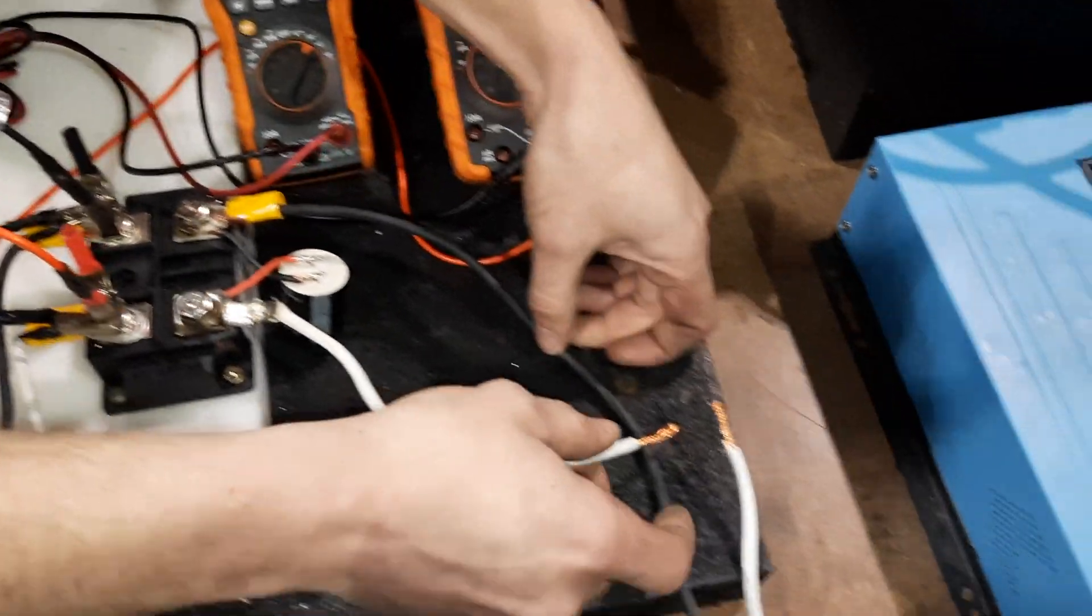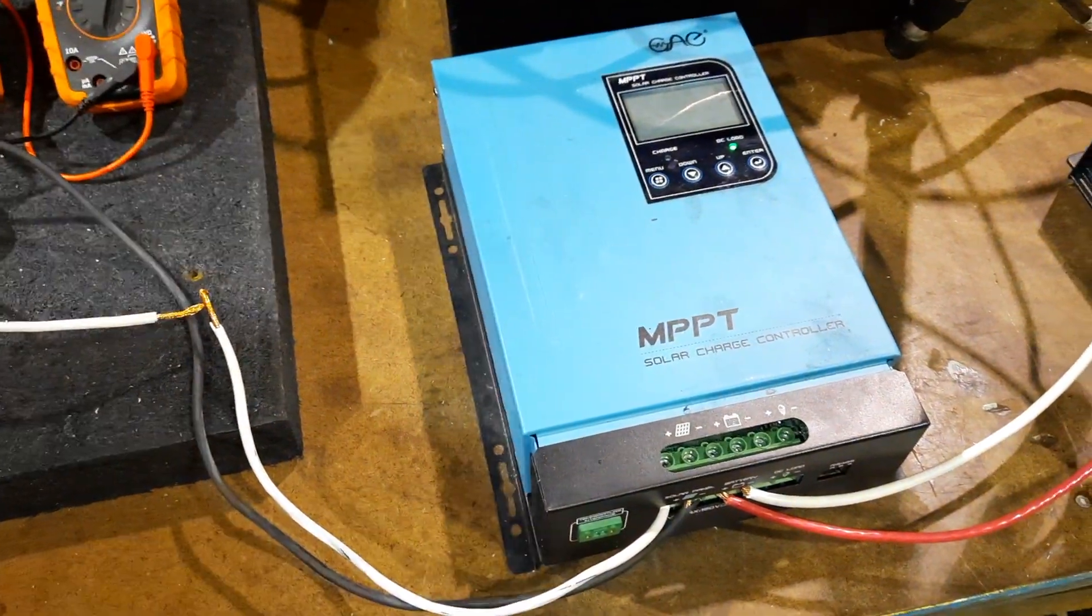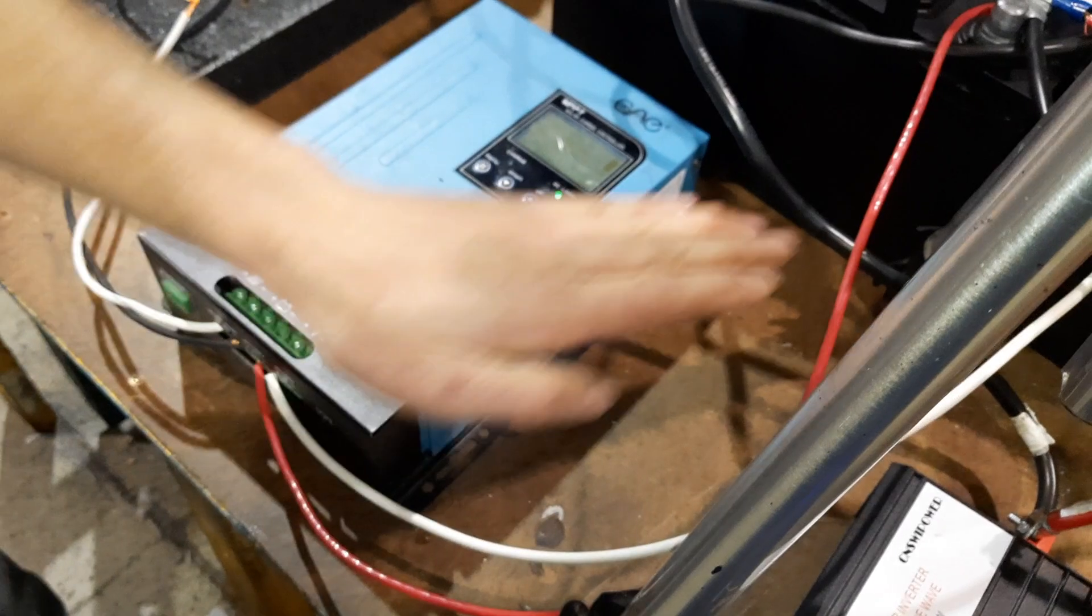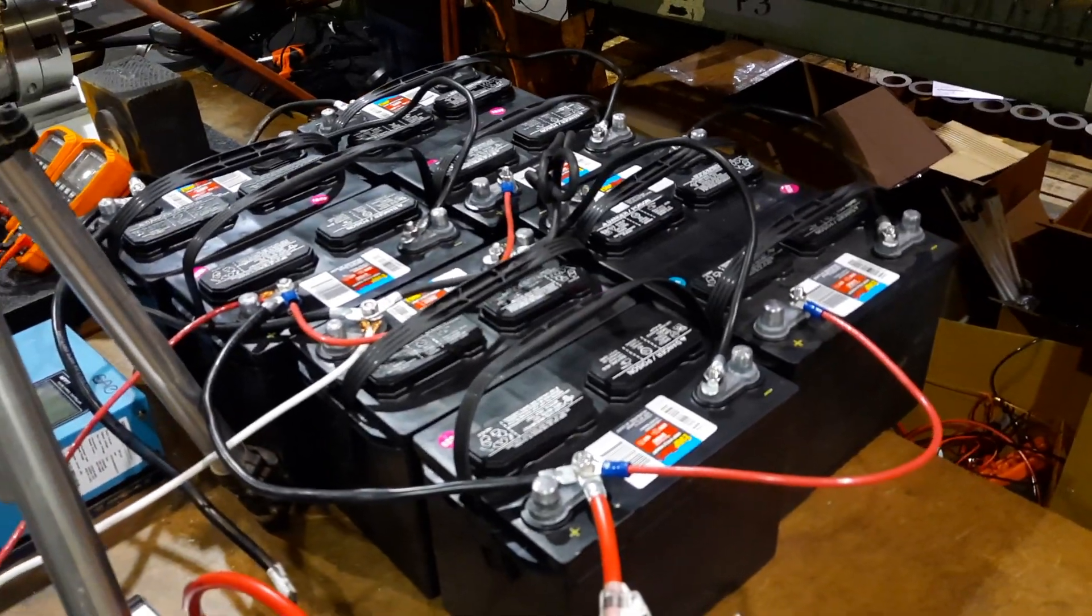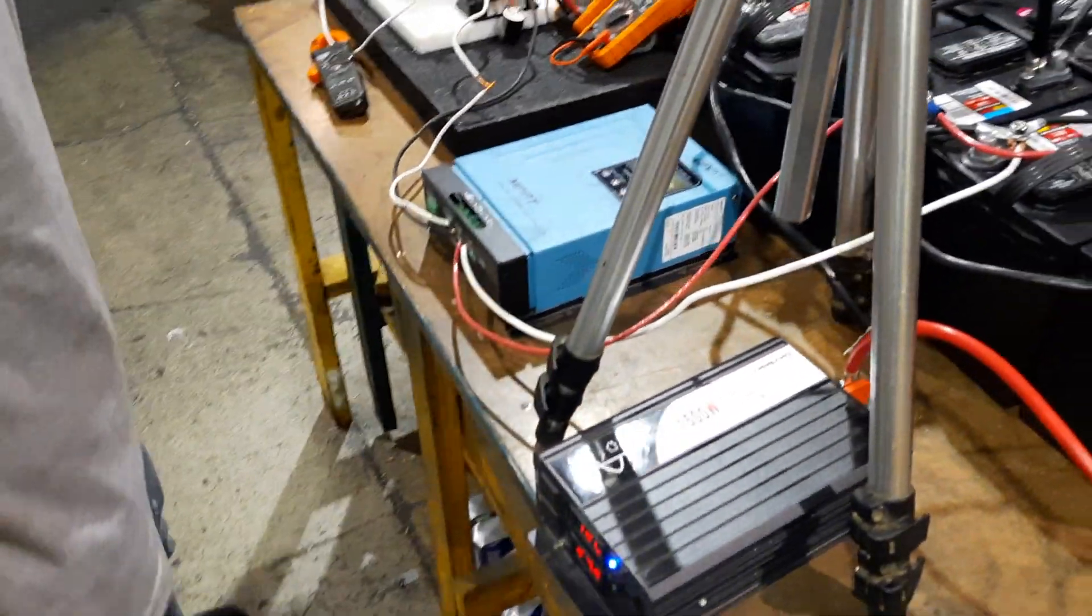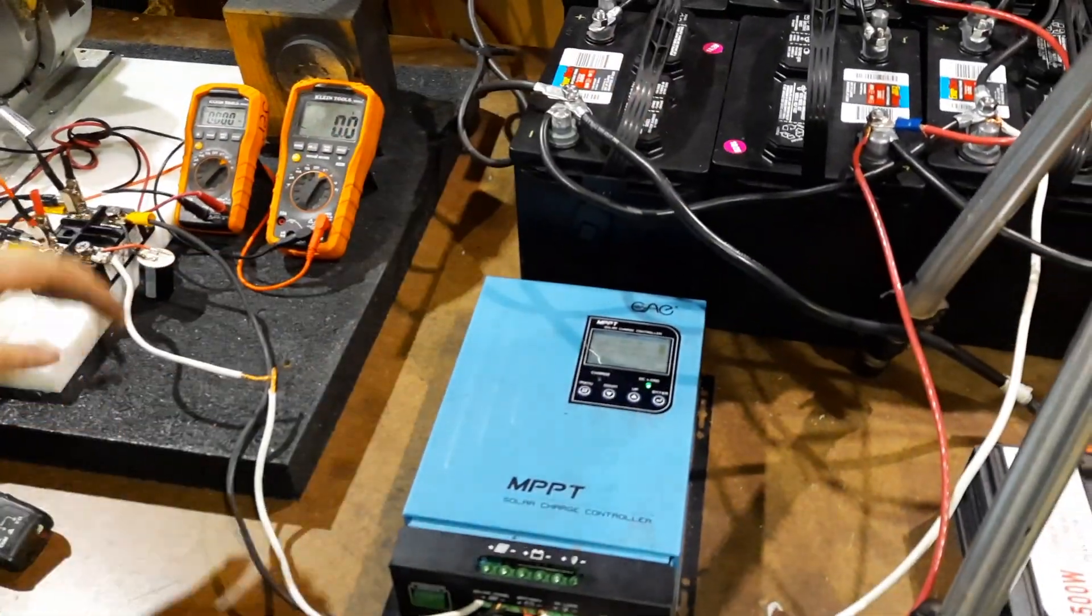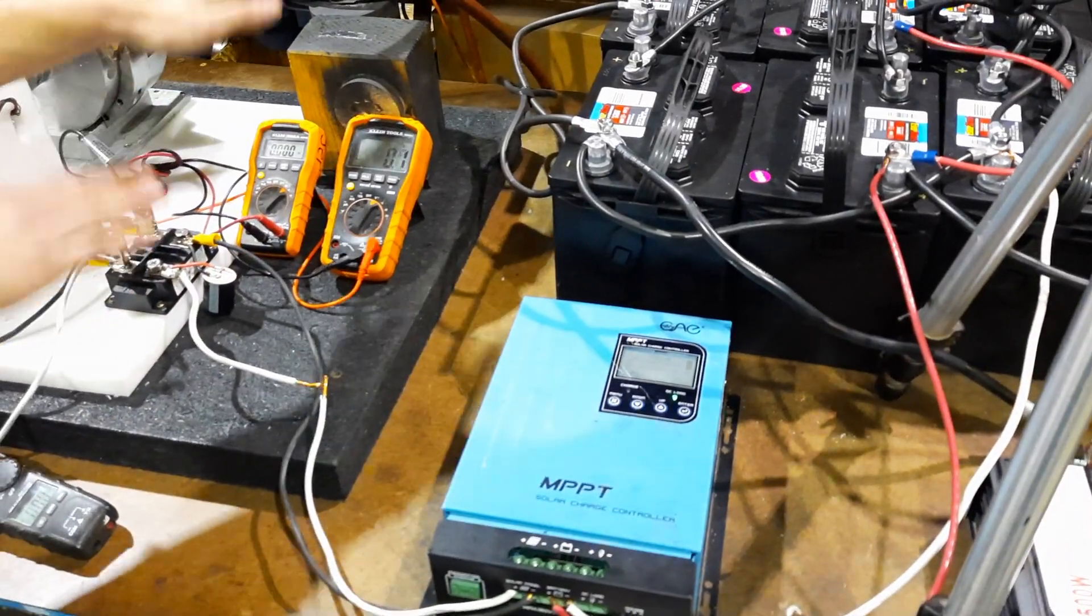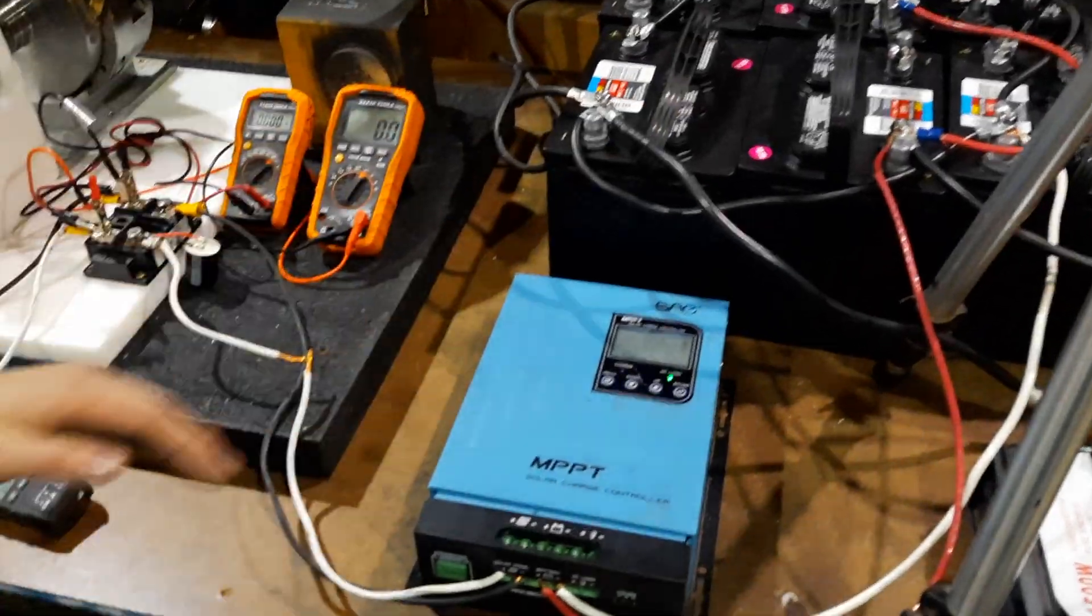And then we feed that direct current into our charge controller. Our charge controller takes a higher volt DC, turns it into a lower volt DC to charge our batteries. So what actually ends up happening is the amps go up and the volts go down when you charge your batteries. So the charge controller takes a higher voltage that varies, turns it into a lower volt DC for your batteries. That's stable.